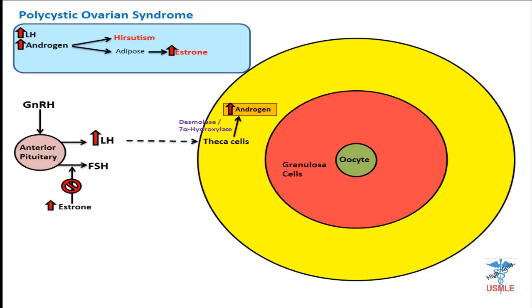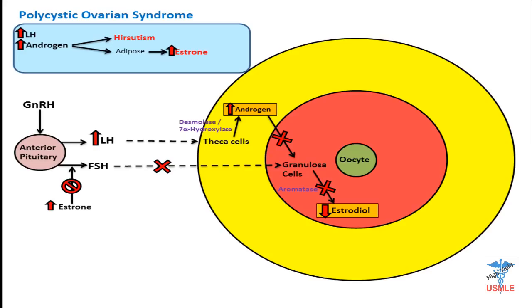This estrone negatively feedbacks the release of FSH, so we don't have any more FSH. Therefore, FSH cannot stimulate the granulosa cells. Even though we have a lot of androgen, we cannot make estradiol. Since there's a decrease in estradiol, we will not mature the egg. Therefore, we're going to have cystic degeneration of the follicles. This is the pathway you need to know in order to understand this disease.